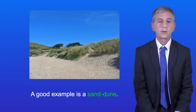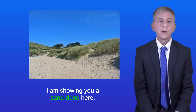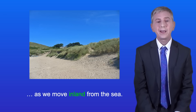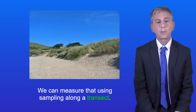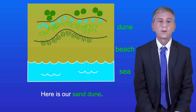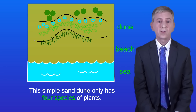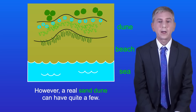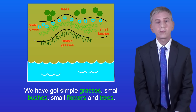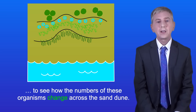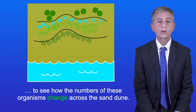A good example is a sand dune — I'm showing you a sand dune here. The species of plants we find on a sand dune change as we move inland from the sea, and we can measure that using sampling along a transect. Here's our sand dune: we've got the sea, the beach and the dune. This simple sand dune only has four species of plants — simple grasses, small bushes, small flowers and trees — however a real sand dune can have quite a few. We're going to use sampling along a transect to see how the numbers of these organisms change across the sand dune.